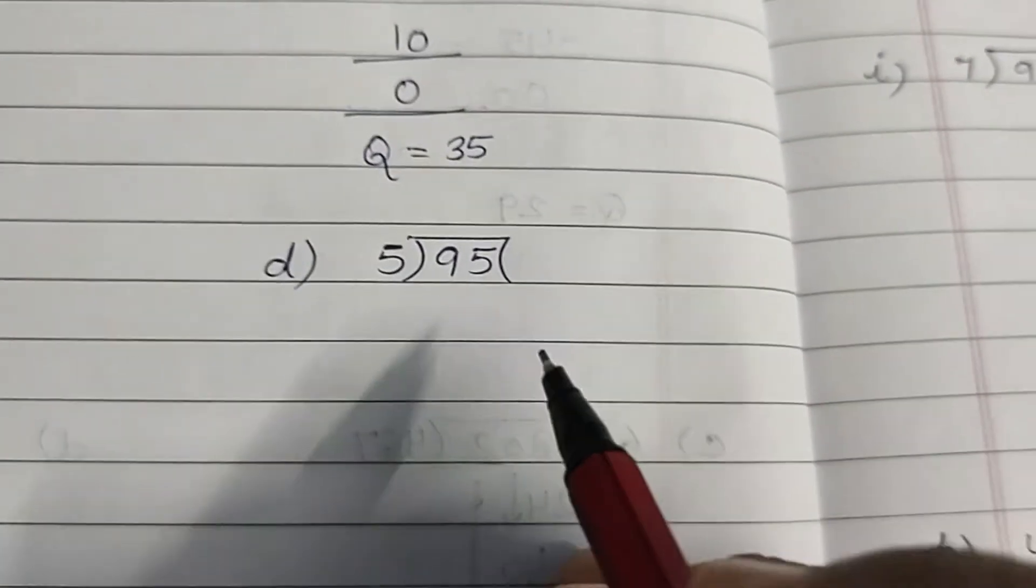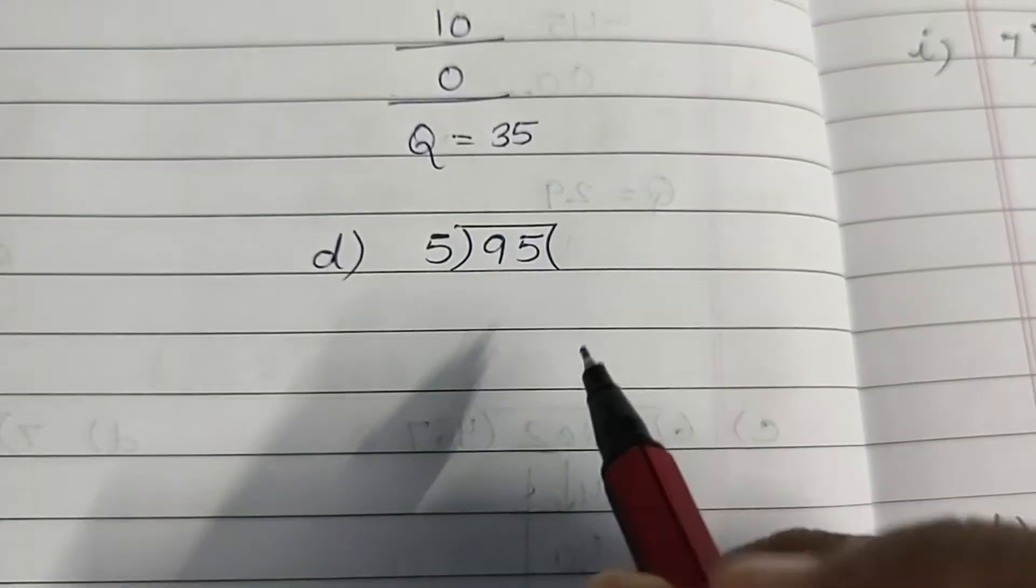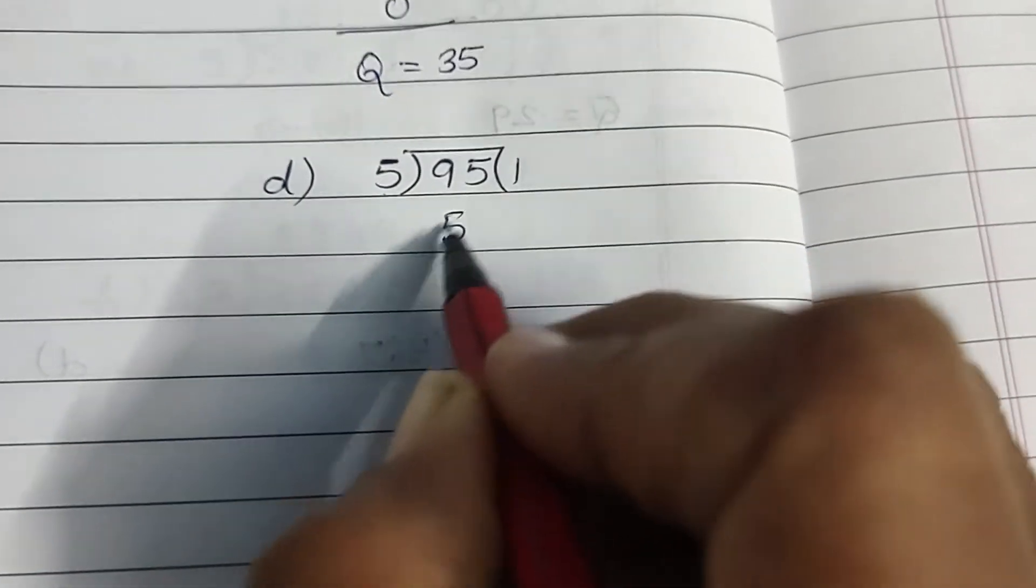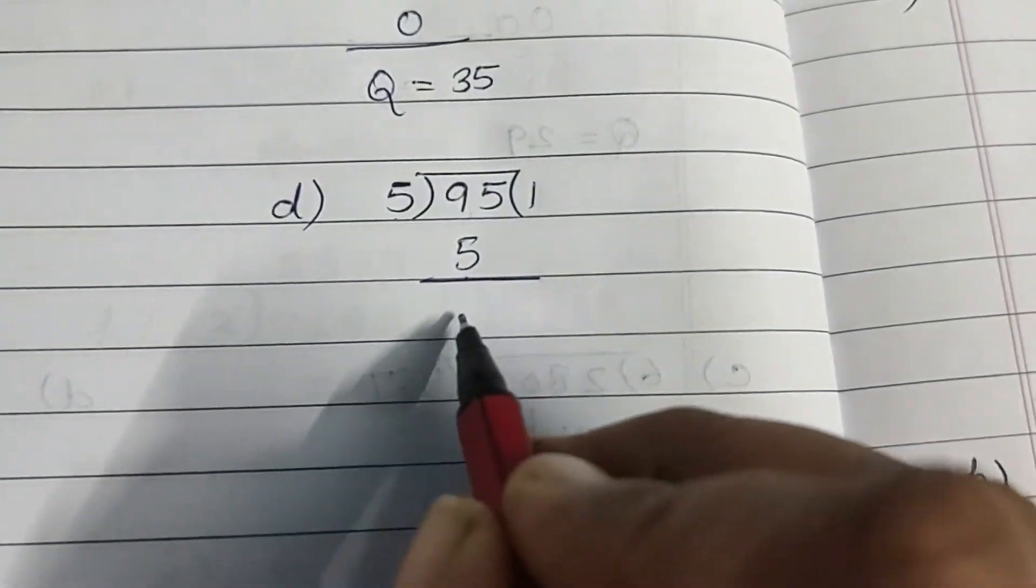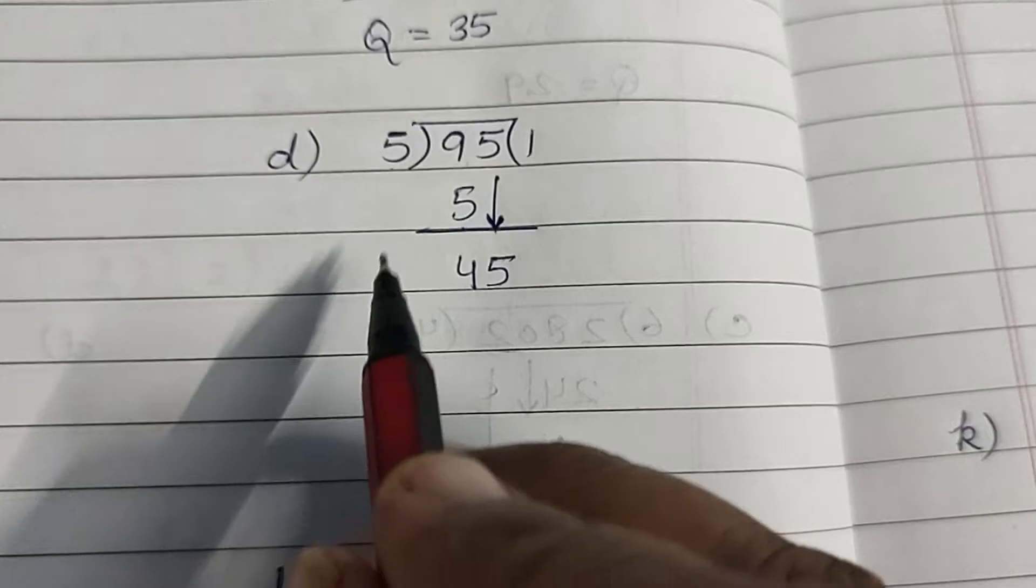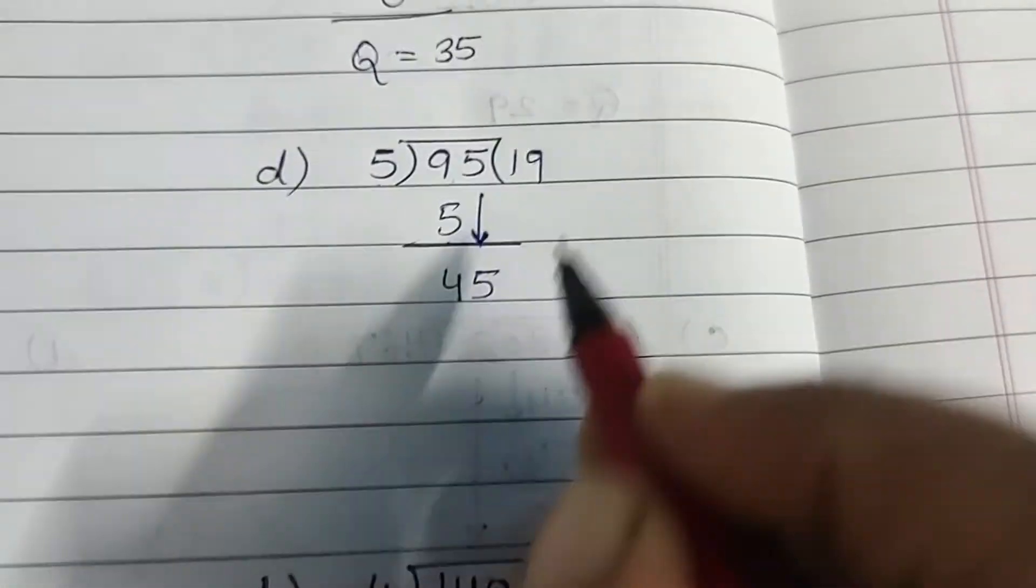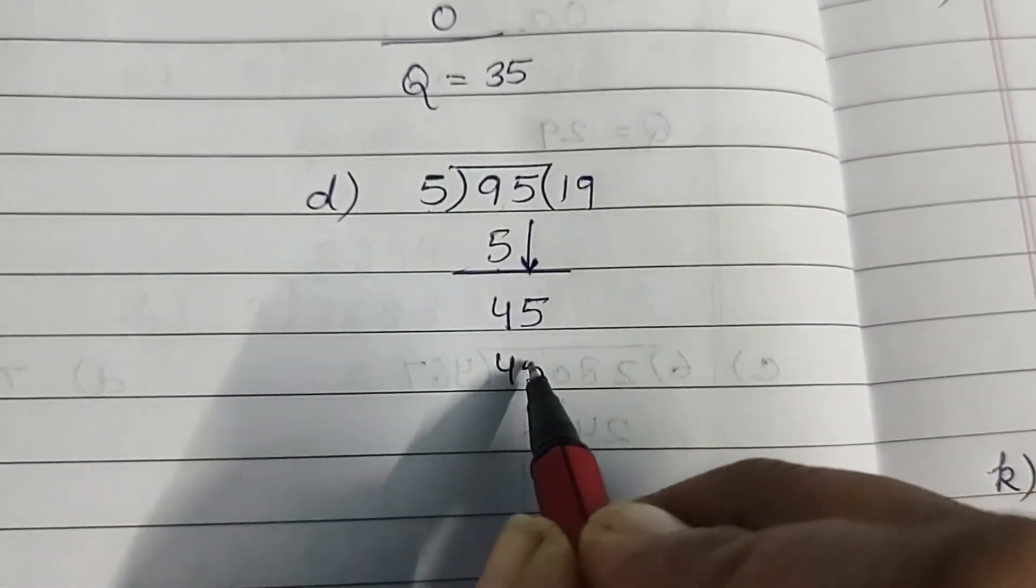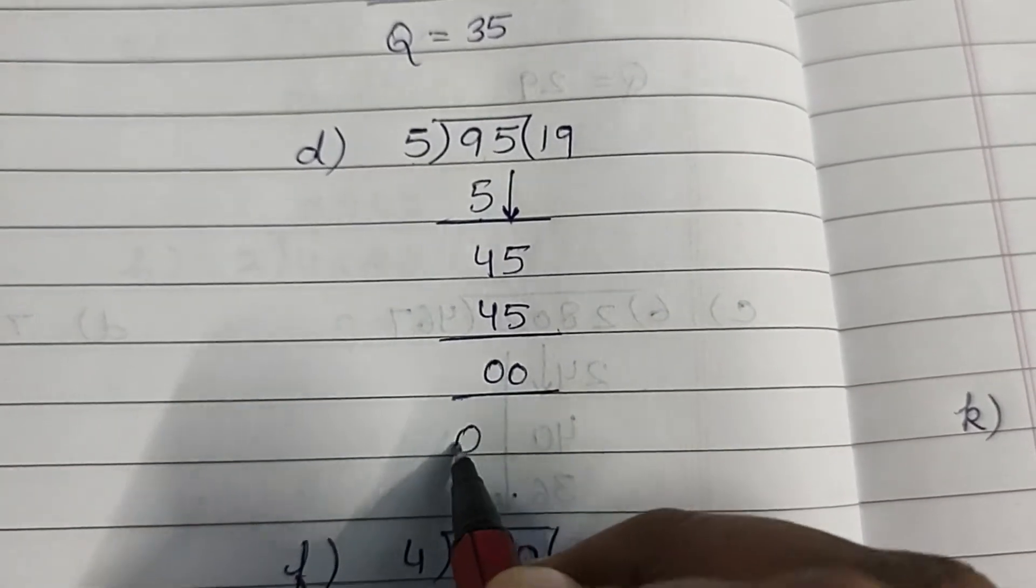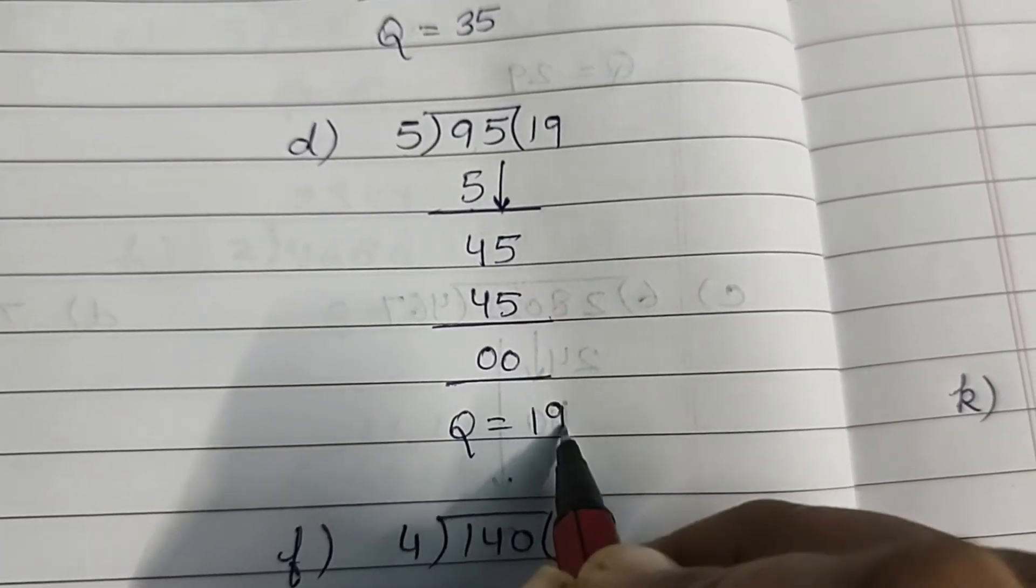Agar table aati hai, bahut easy hai. Table jisko nahi aayenge, usko bahut difficult hoga sum karna. 5×1, 5. 9 minus 5, 4. Bring 5 down, ban gaya 45. Now 5×9, 45. 45 minus 45, 0. Quotient is equal to 19.